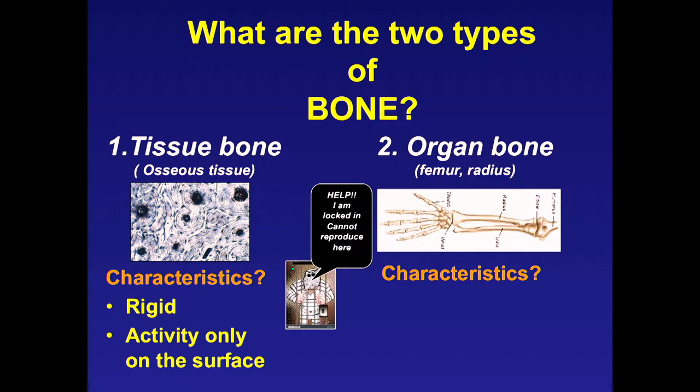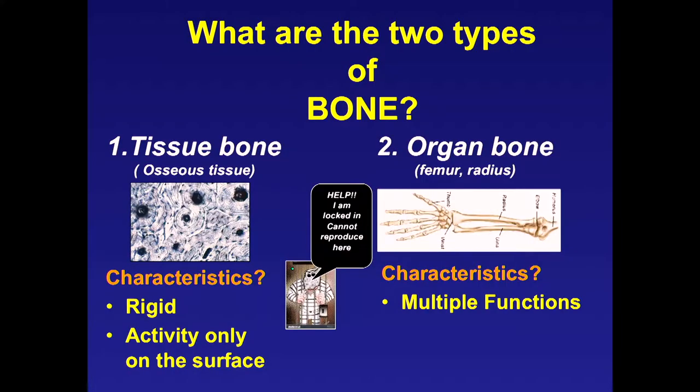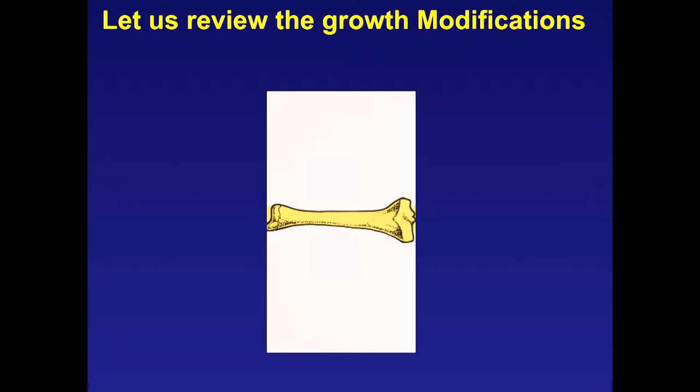Organ bones—like the radius, ulna, tibia, and femur—have multiple functions: hematopoietic, structural support, and they're the sources of calcium and phosphorus in the body. But they've got to grow. Since the tissue cells themselves cannot grow, how does the organ bone grow? The organs are modified so they can get larger as the child gets bigger. They grow in length through endochondral ossification.